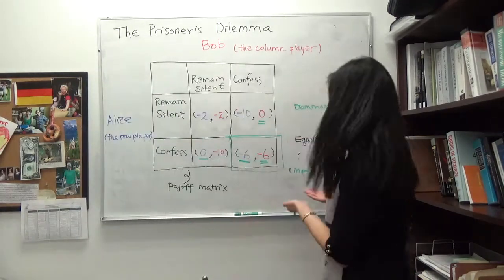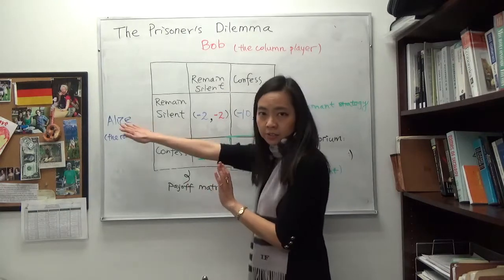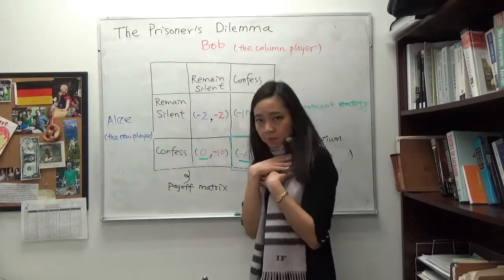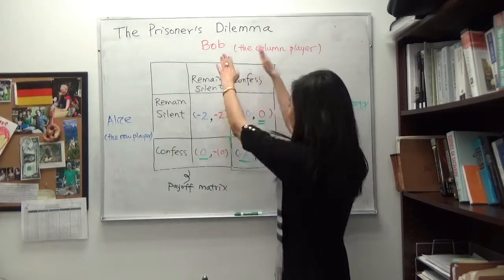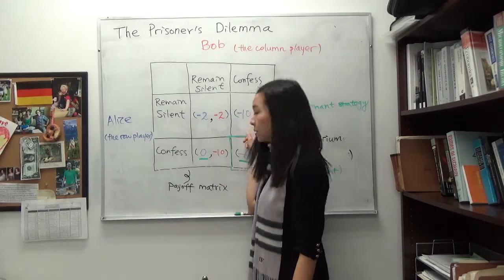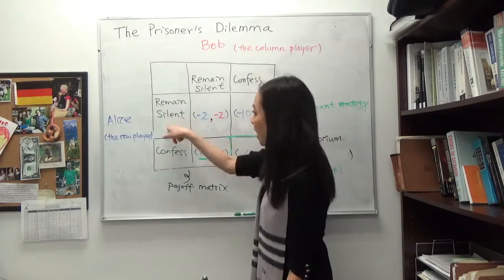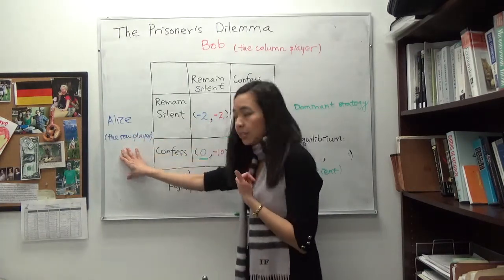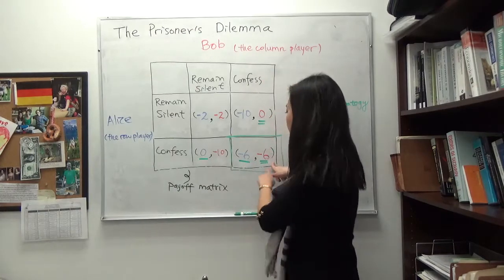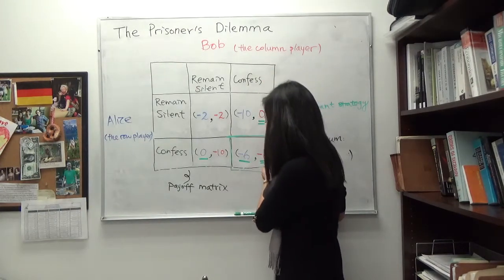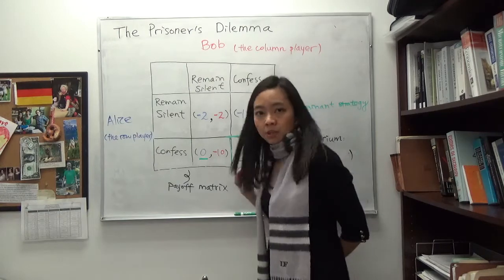What about Bob? It's actually exactly the same — this game is symmetric, so Bob is looking at exactly the same matrix as Alice. Given that Alice remains silent, Bob can choose to remain silent and get 2 years in prison, or confess and get 0 years — go free right away. So 0 years is better than 2 years, so Bob would choose to confess given Alice remains silent. What if Alice chooses to confess? If Bob remains silent, Bob gets 10 years; if Bob confesses, Bob gets 6 years. So 6 years is better than 10 years — Bob also has a dominant strategy: confess.